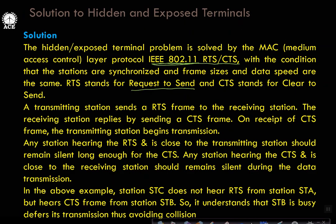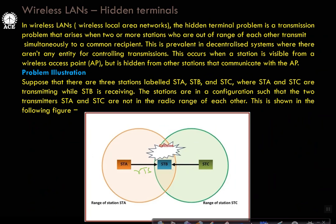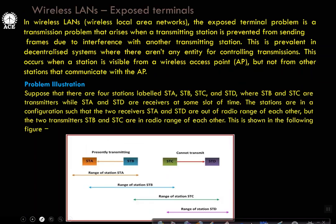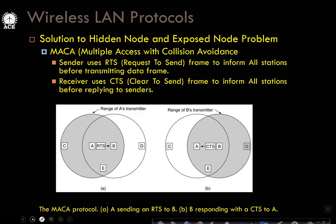Station C does not hear RTS from station A, but hears CTS from station B. When station B responds with CTS, that can be heard by STC. In that case, STC should remain silent for communication with STB, assuming B is going to receive data from a nearby station. When C remains silent, collision will not happen. By hearing CTS from station B, C understands that STB is busy, and therefore its transmission is deferred — avoiding the collision.